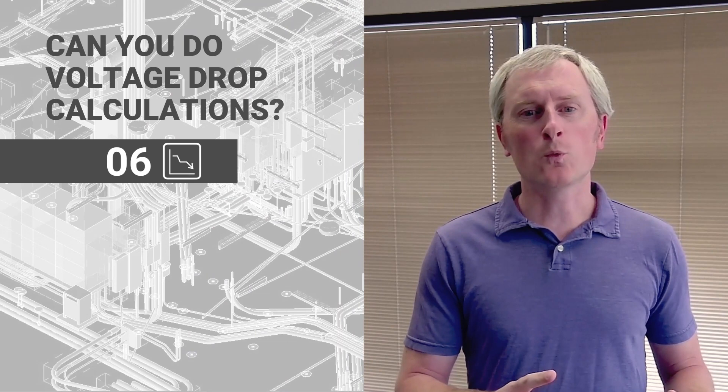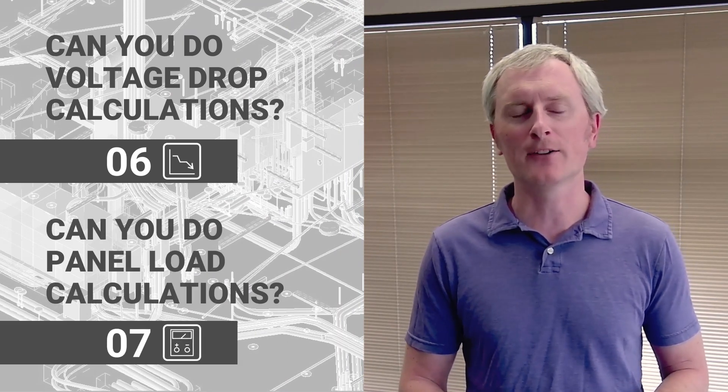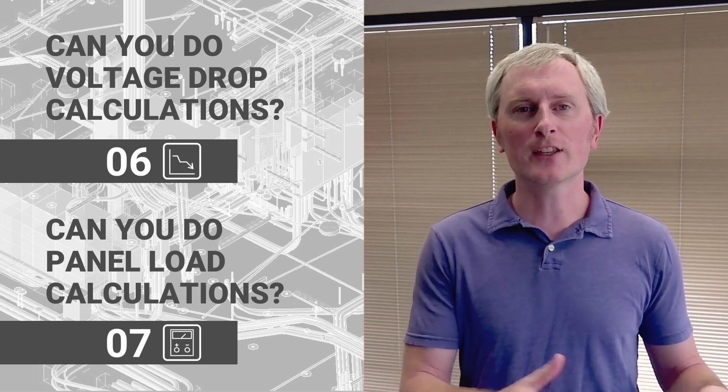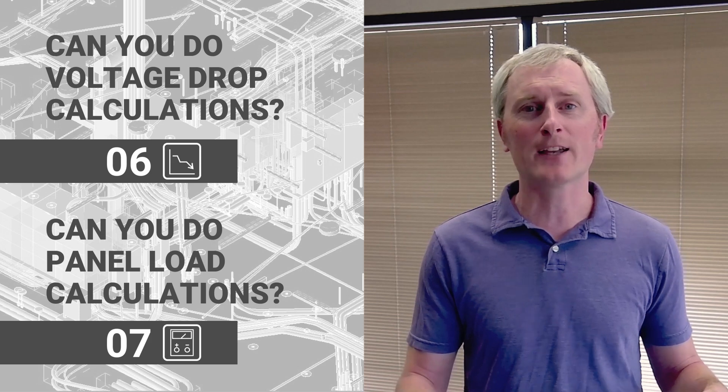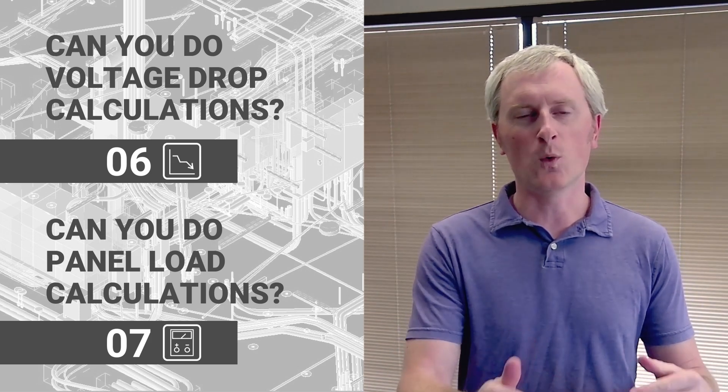The next two questions are whether you can do a voltage drop calculation and whether you can do a panel load calculation — a score of six or seven. Six if it can do one, seven if it can do both. Voltage drop is the first obvious calculation: you have your devices laid out, you have wire sizes, and you can pull wire lengths from the model. Then panel load calculations look at feeder and service load calculations, applying demand factors to figure out what the actual load on a panel is going to be.